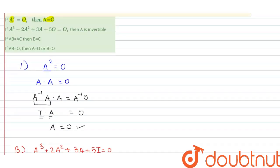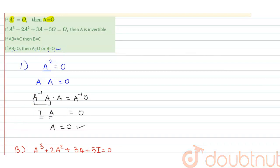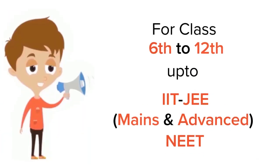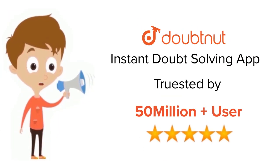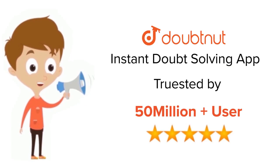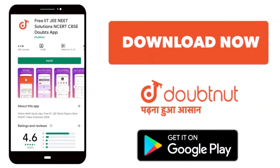Statement D: if A into B equals zero, then A equals zero or B equals zero. This is also correct. Thank you. For class 6 to 12, IIT-JEE and NEET level, trusted by more than 5 crore students. Download DoubtNet app today.